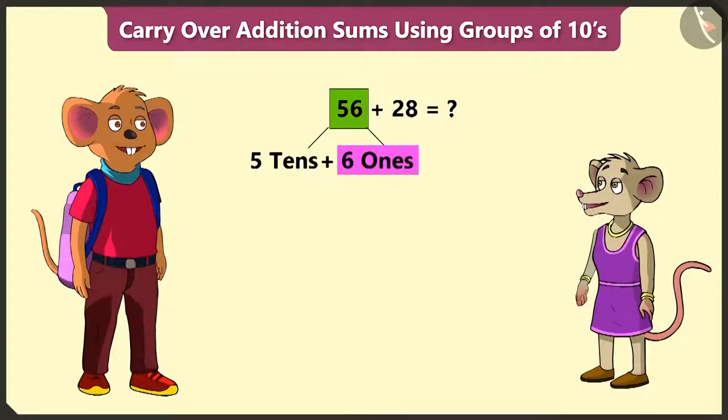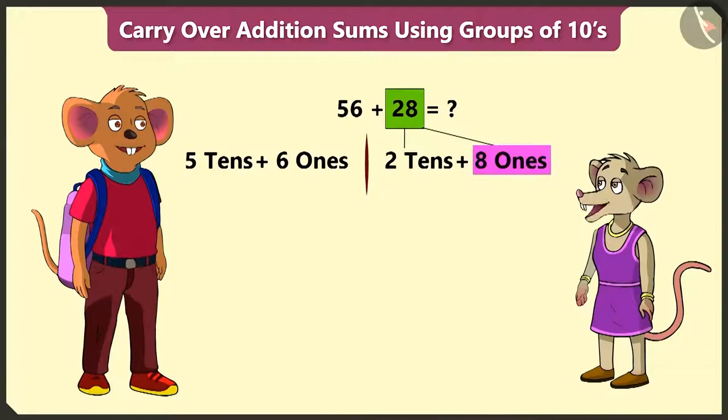56, that is 5 tens and 6 ones. And 28, that is 2 tens and 8 ones. Well done. And then?